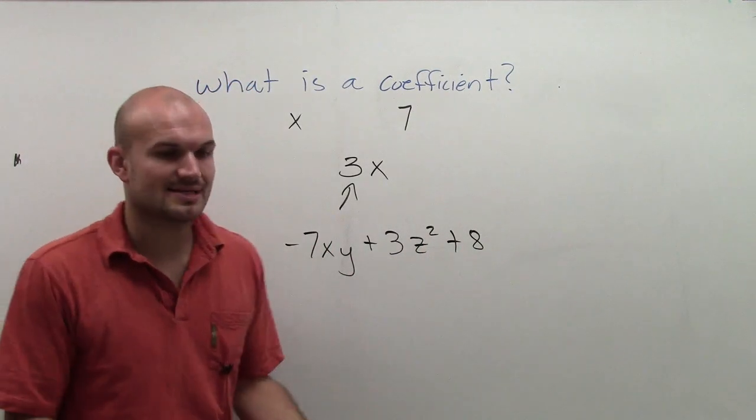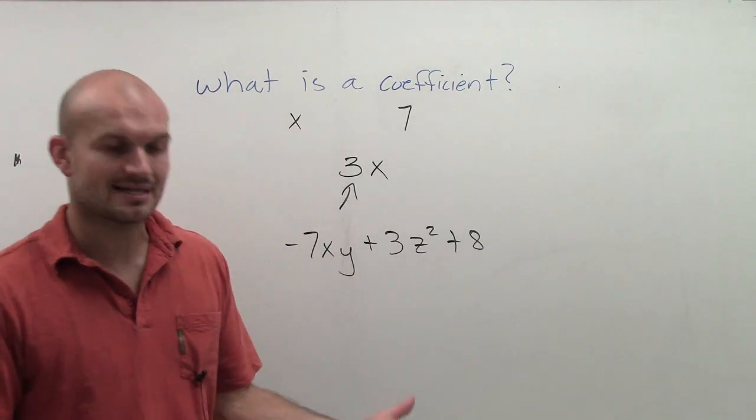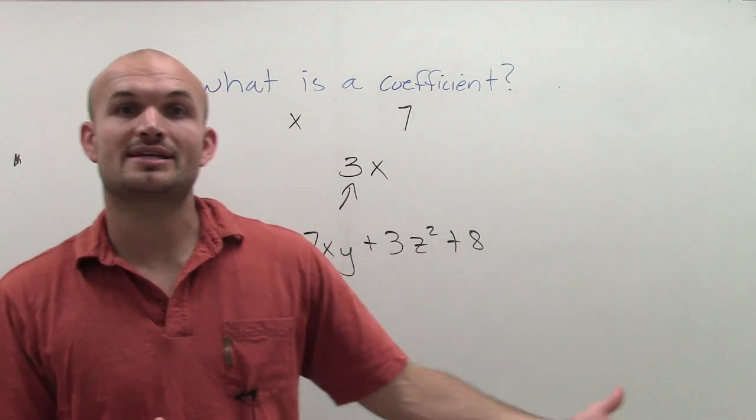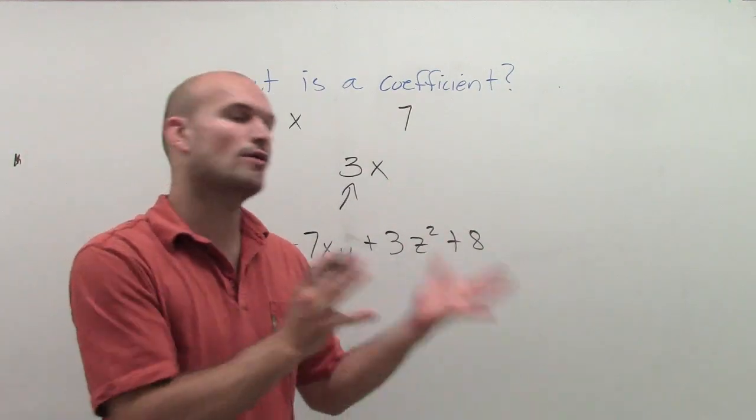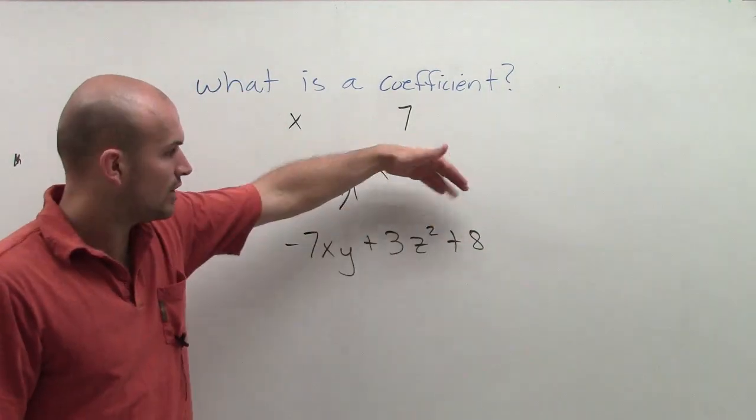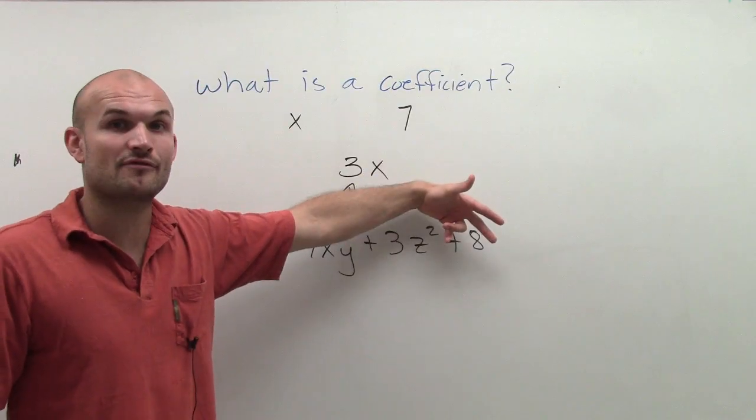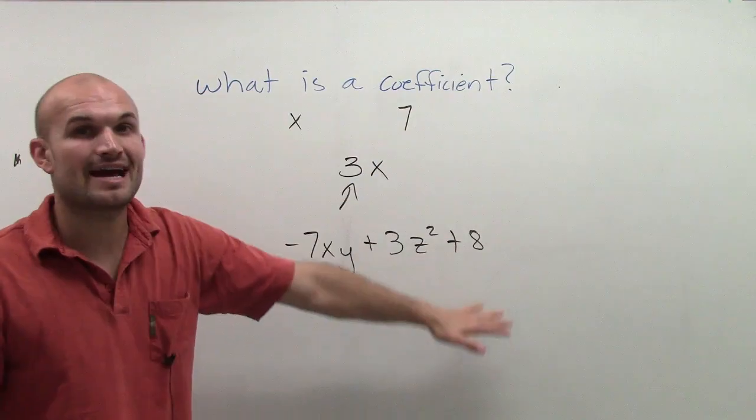So if I want to say, what are all of my coefficients, right? And a lot of times your teacher will say, hey, you know, take your coefficient or here's the coefficient of this value. So let's look at all the coefficients. Well, 8 is a constant. So it doesn't have a variable with it. So it's not going to have a coefficient.